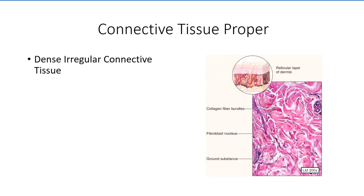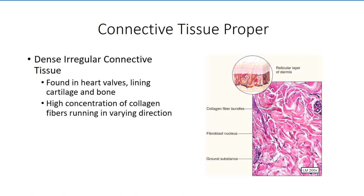In tissues which encounter forces along multiple planes, such as the heart valves and periosteal lining of bones, we typically see dense irregular connective tissue. Once again, we see a high concentration of collagen fibers, but in this case, fiber bundles run at oblique angles to one another. There is therefore less tensile strength than is seen in dense regular connective tissue along the designated axis, but the tissue is able to withstand forces projecting in multiple directions.